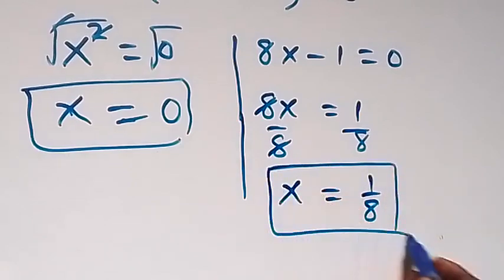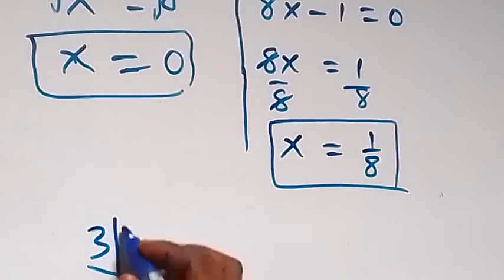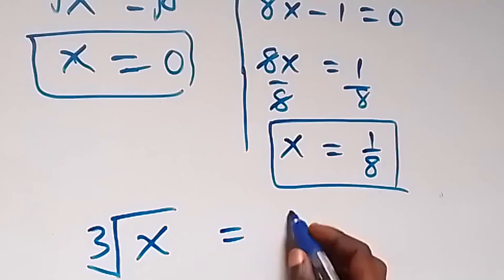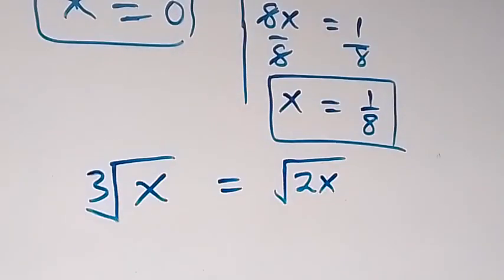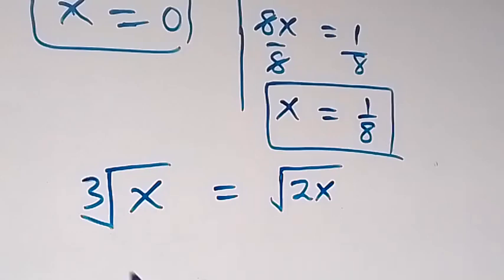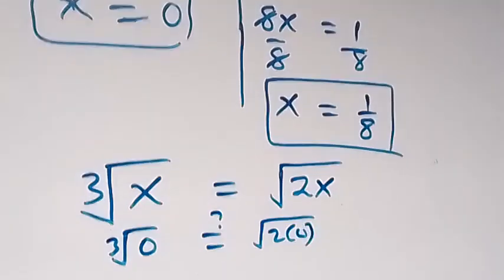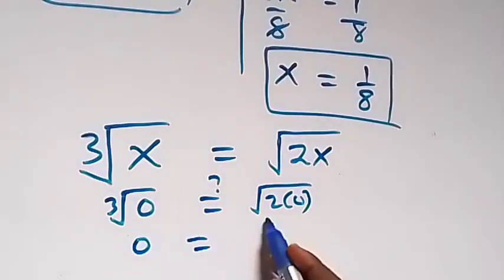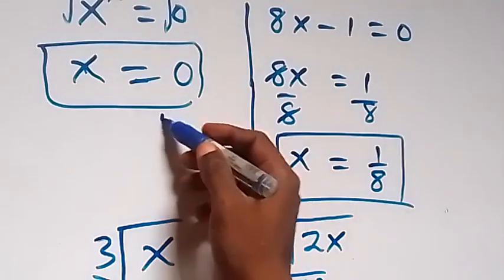Let's check using the original equation: cube root of x equals square root of 2x. Substituting x equals 0: cube root of 0 equals square root of 2 times 0. Cube root of 0 is 0, and square root of 0 is also 0. So 0 equals 0, meaning x equals 0 satisfies the equation.